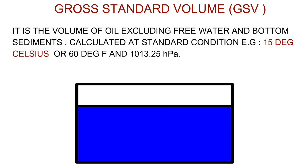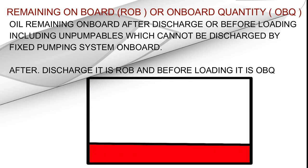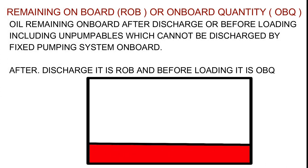The volume of water and bottom sediments is calculated at standard conditions, e.g. 15°C or 60°F. Remaining On Board (ROB) is the quantity of oil remaining on board after discharge or before loading, including unpumpables which cannot be discharged by the fixed pumping system. Before loading, this is called On Board Quantity (OBQ).